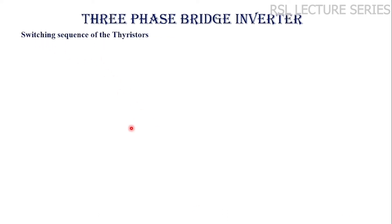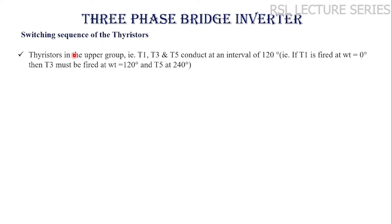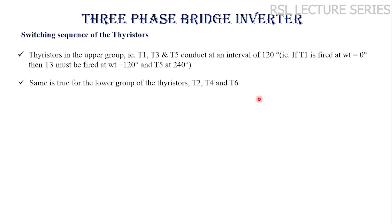Now we will see the switching sequence of the thyristors. Thyristors in the upper group, that is T1, T3 and T5, conduct at an interval of 120 degrees. If T1 is fired at omega-t equal to 0, T3 must be triggered at omega-t equal to 120, and T5 should be triggered at 240. The thyristors are triggered at 120 degree intervals whereas each thyristor conducts for a period of 180 degrees, because this is 180 degree mode of conduction. This is true for the lower group of thyristors also.